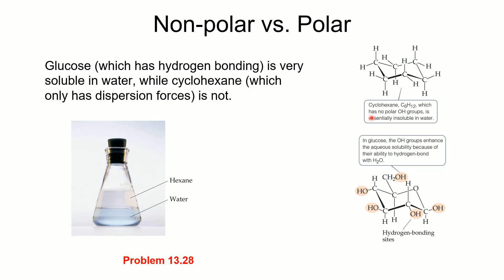To emphasize polar versus nonpolar: here we have what it looks like when we get a separation of immiscible liquids. Hexane is less dense than water, so the hexane floats on top and water is on the bottom. Cyclohexane is not water-soluble, so it forms a two-layer mixture. Whereas a structure with the same number of carbons and hydrogens but with all these OHs — like glucose — ends up being quite soluble in water. So: insoluble in water for cyclohexane, and soluble for glucose.